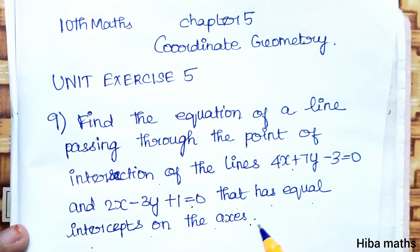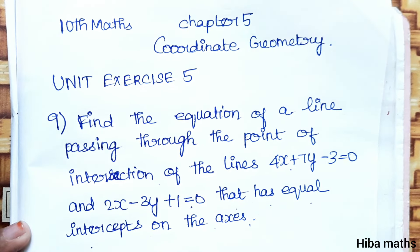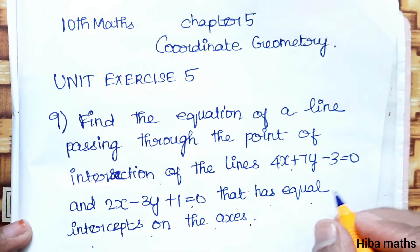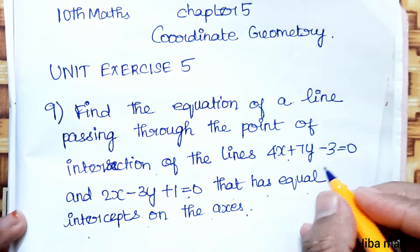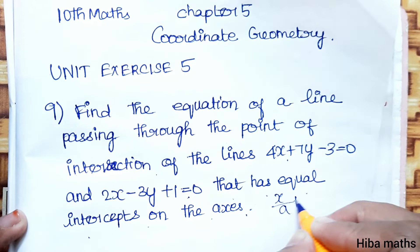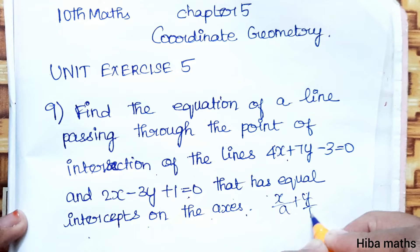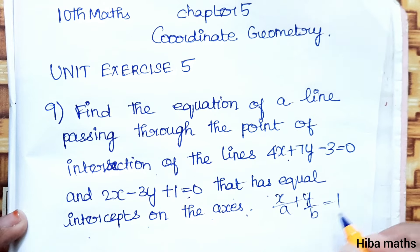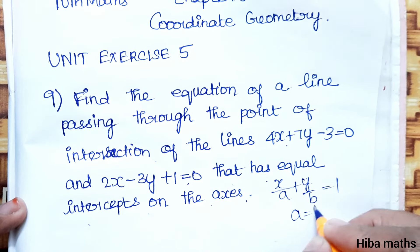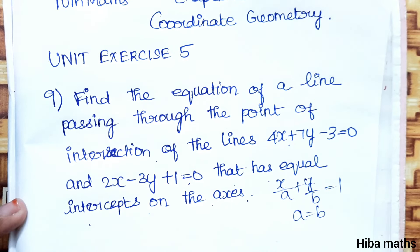We have the equation, the intersection point, and the condition of equal intercepts. The intercept form is x/a + y/b = 1. Equal intercepts means a is equal to b.